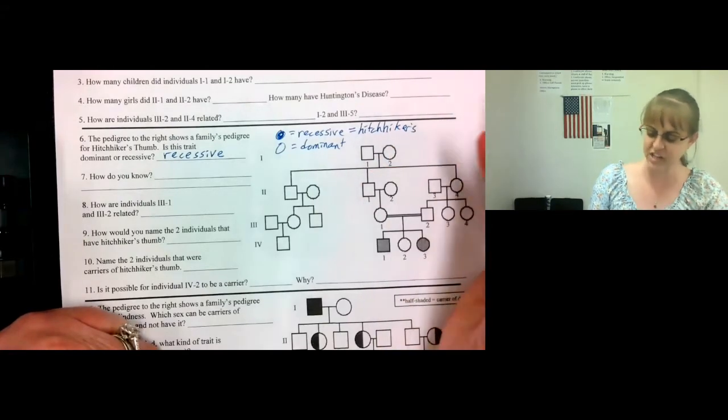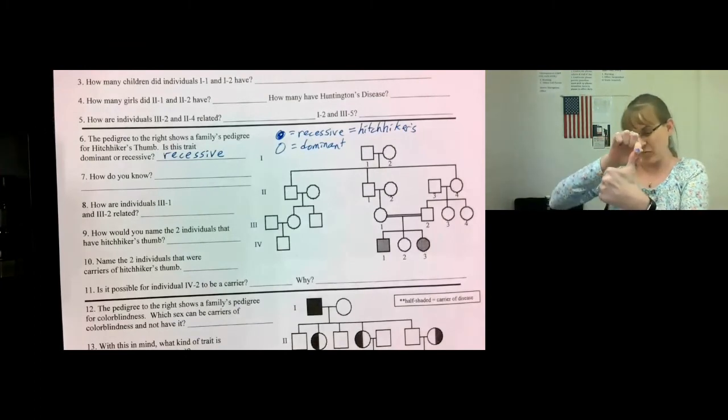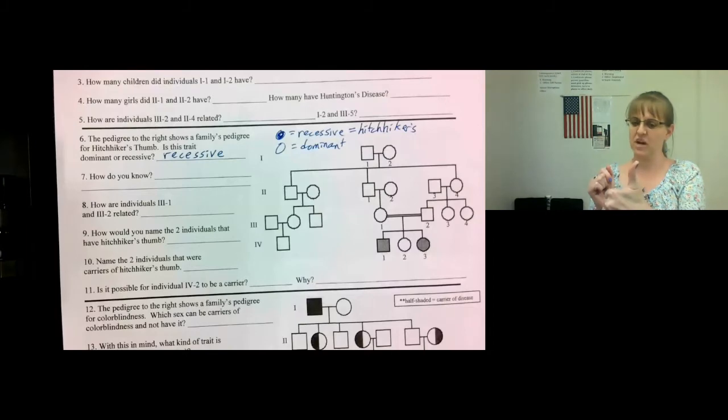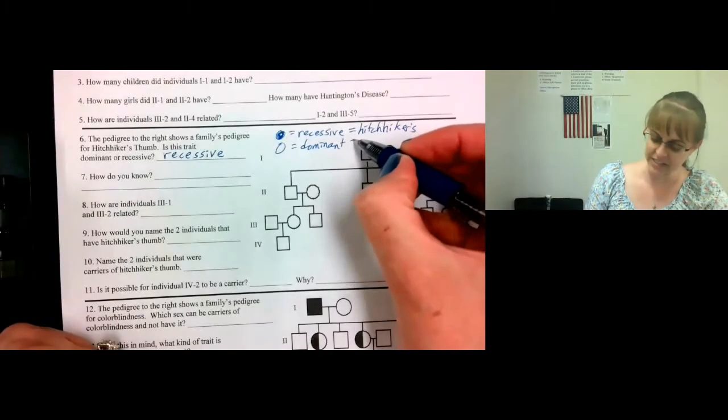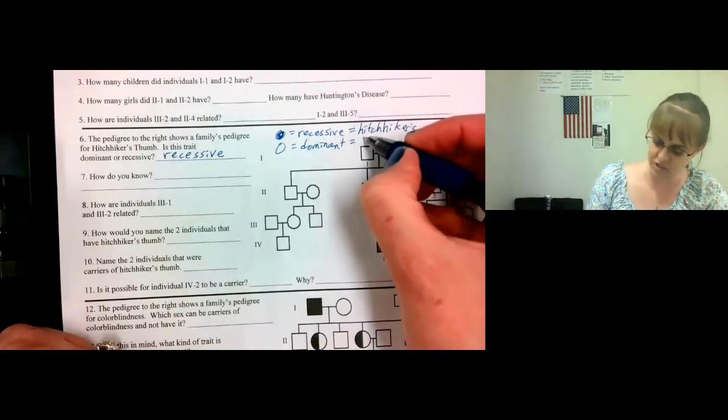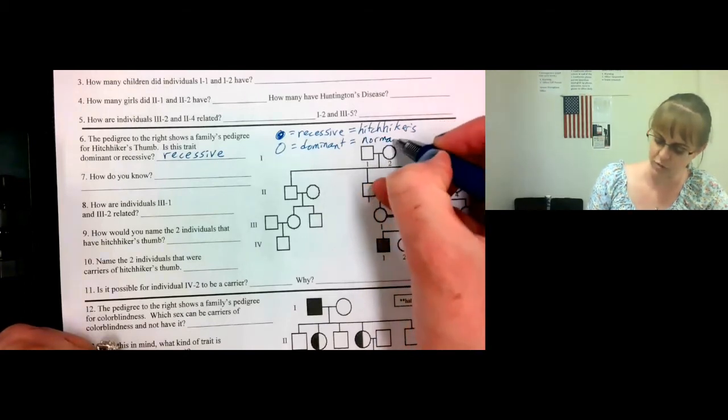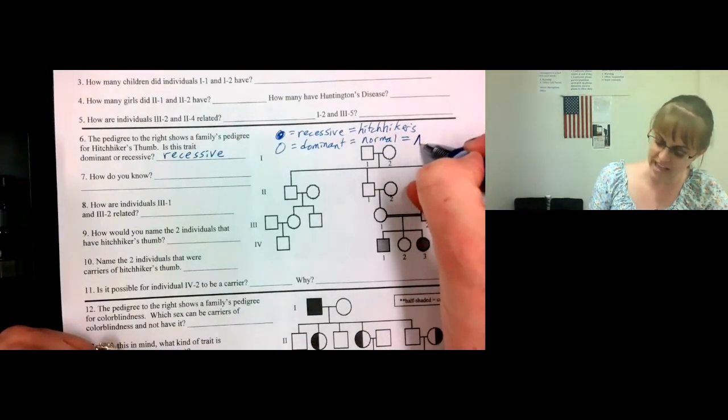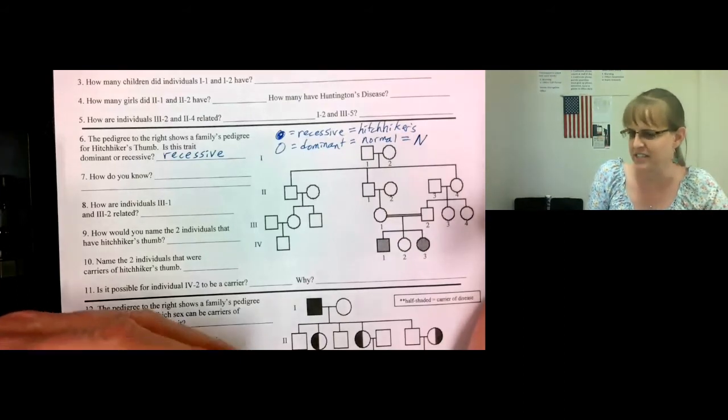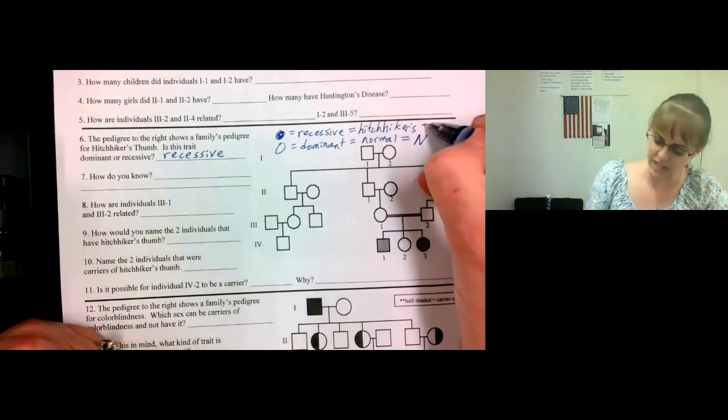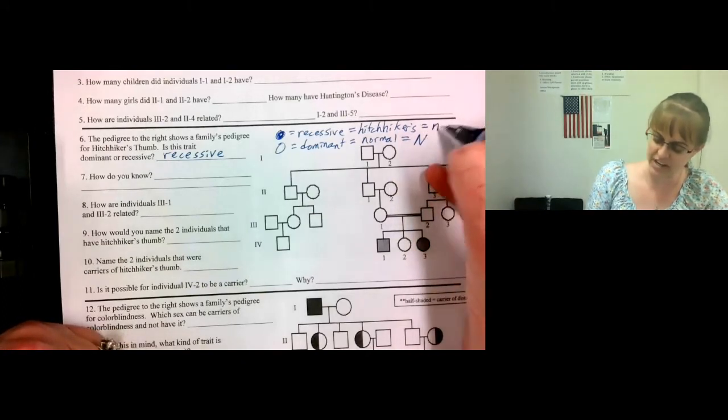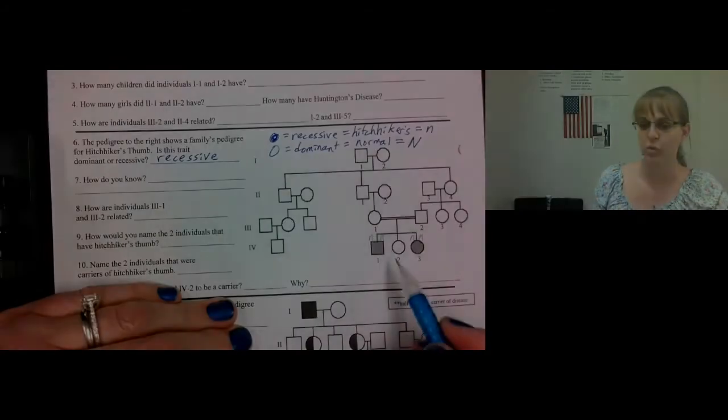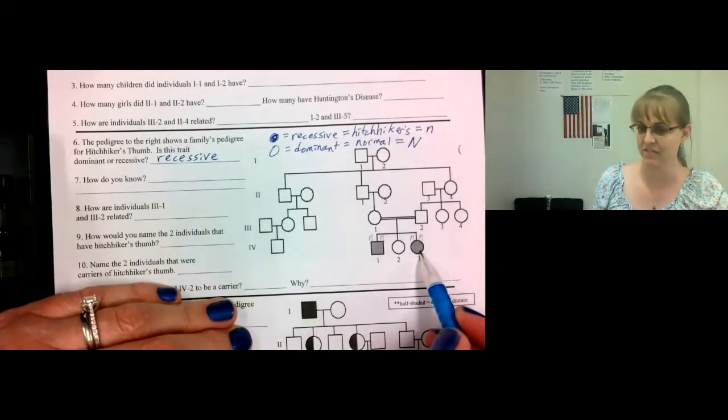By the way, Hitchhiker's Thumb is when you hold up your thumb and it kind of bends way back. I don't really have that. It's not perfectly straight, but it's not way back either. So dominant is a normal thumb. So let's just put normal. We use the letter of the dominant trait. So let's use a capital N. If you put straight instead of normal, that's fine too. Then you would use a capital S. So Hitchhiker's has to be the same letter, lowercase.